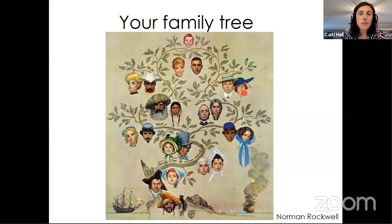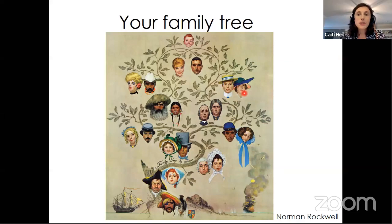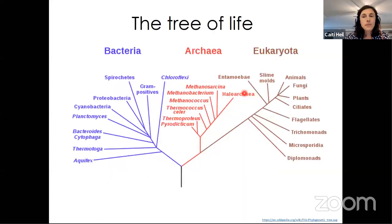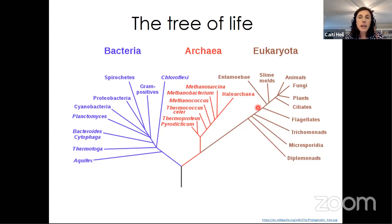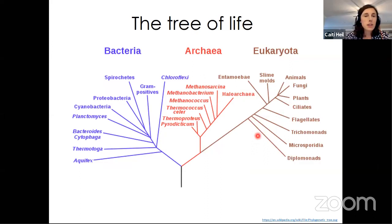Last week we heard from Matthew Booker about stories around sourdough and baking. Like Matthew, some of you may be able to trace your starter back through a family tree. We make our family trees based on shared ancestry, and evolutionary biologists do this too. By looking at shared traits and similarities and differences in our DNA, we can make evolutionary trees. This tree is divided into the three domains of life: bacteria, archaea, and eukaryota.